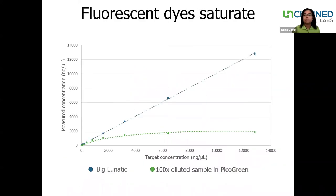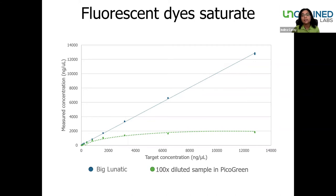Fluorescent methods require that samples fall within the range of known standards, and this can be challenging because fluorescent methods have a smaller dynamic range, which means they saturate easily. In the experiment shown here, you can see the linearity for samples read using Big Lunatic across a wide concentration range, and you can also see the saturation effect with PicoGreen. This curve was generated using the same samples as for Big Lunatic, but the samples were diluted 100-fold. Because of the limited dynamic range with a fluorescent method, a sample might actually have to be diluted multiple times to fall on that standard curve. Lunatic, on the other hand, offers a wide dynamic range with reproducibility and accuracy without the hassle of standard curves and dilutions.